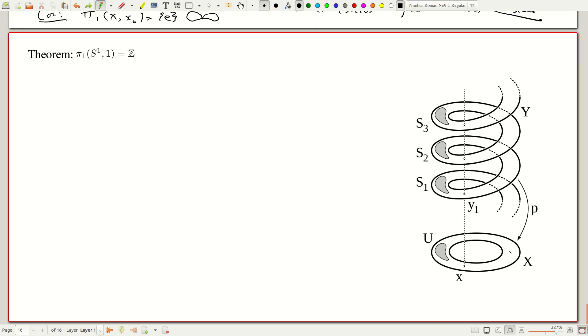So, let me just summarize, let us get rid of this picture and keep it clear. Let me summarize the point that we want to do to show this. We define, of course, φ from, well we will define it from Ω(S¹,1) to ℤ, some number, let me call it φ̃.